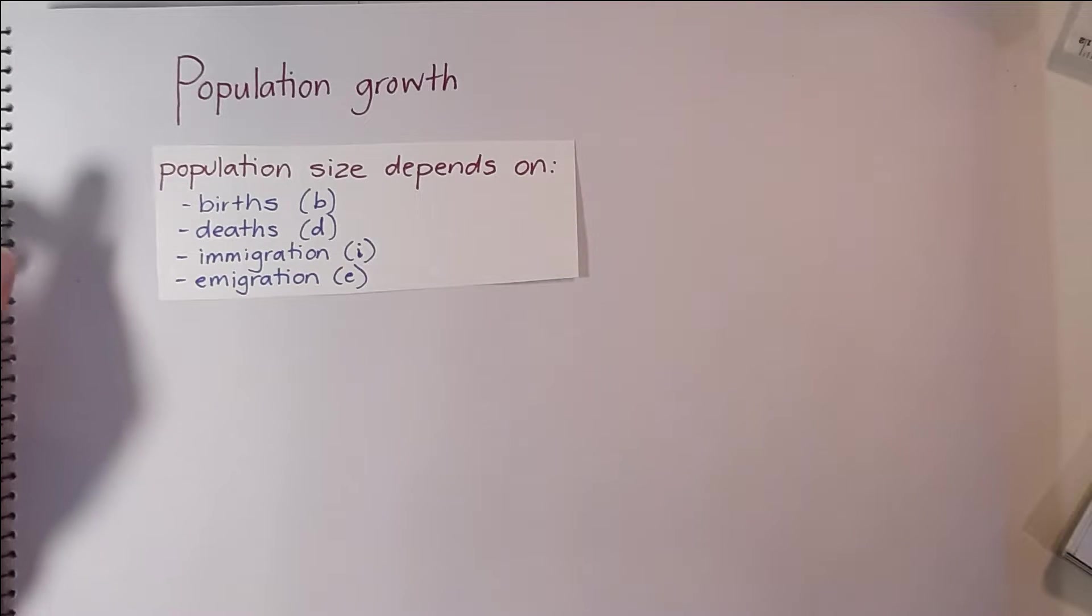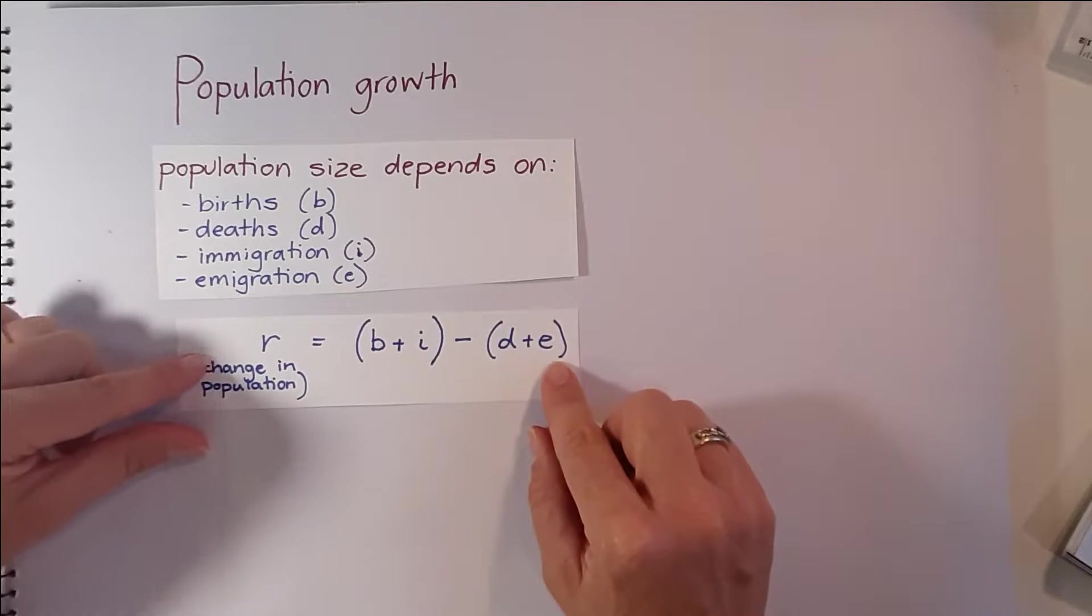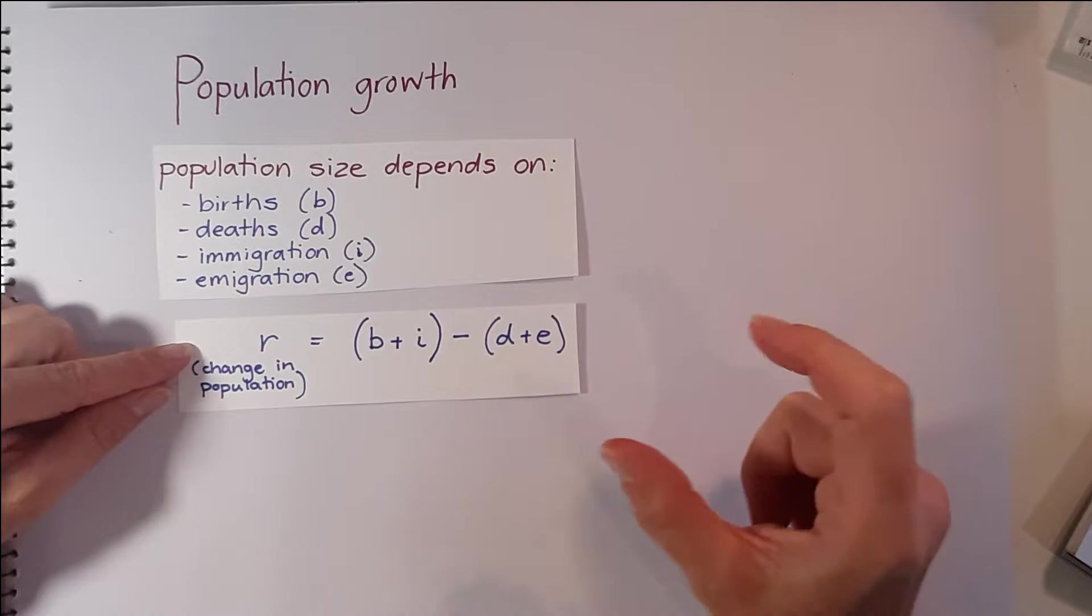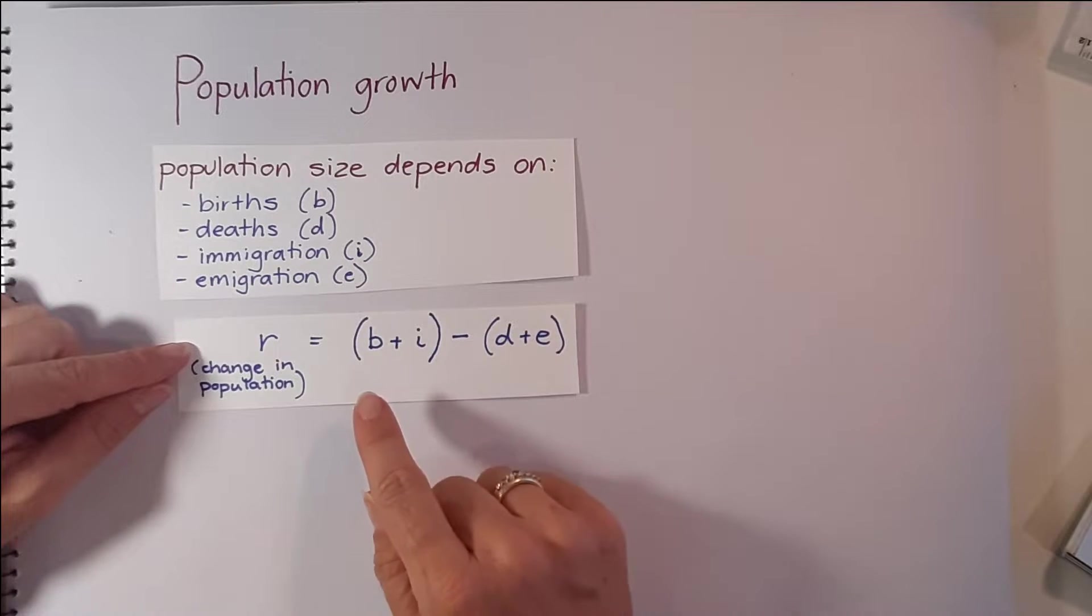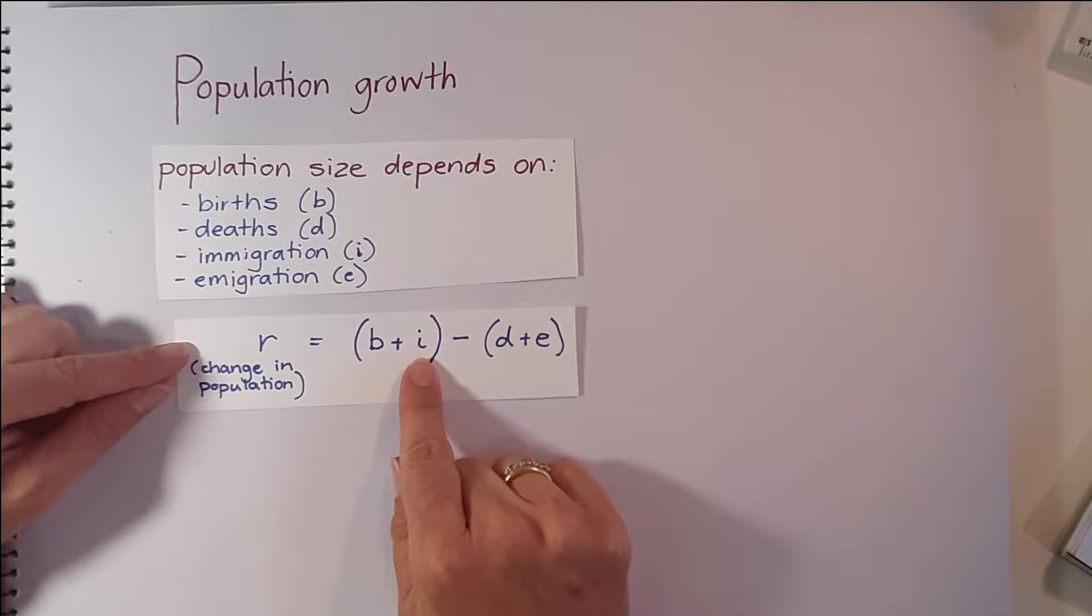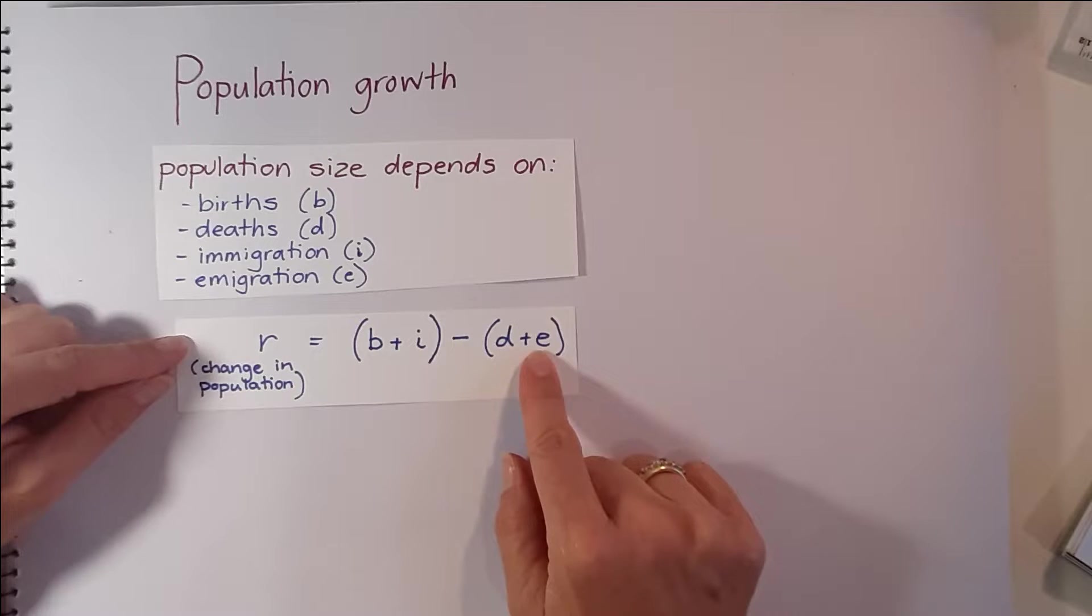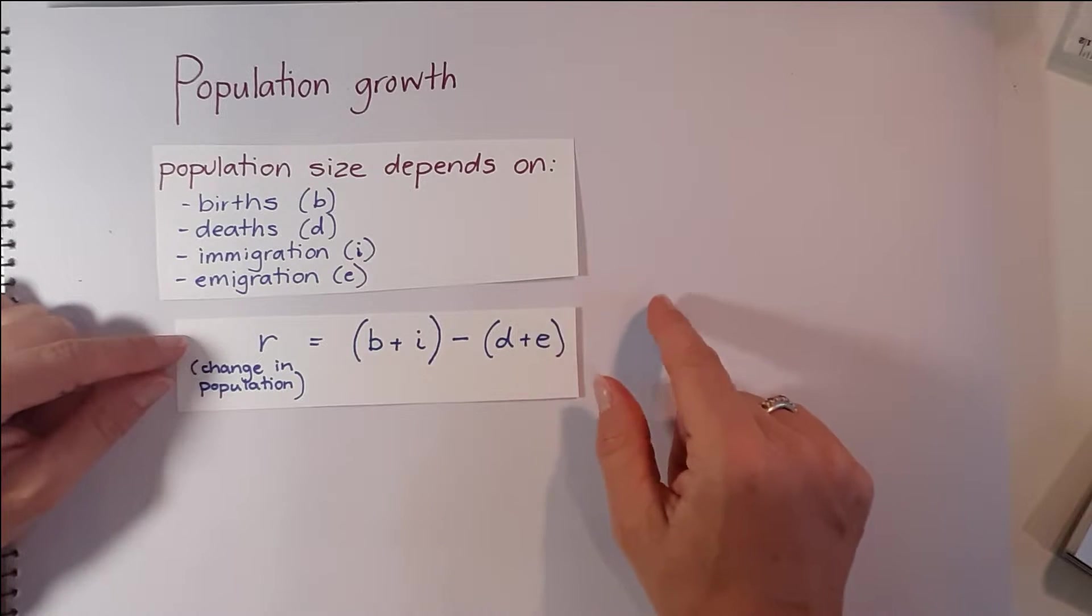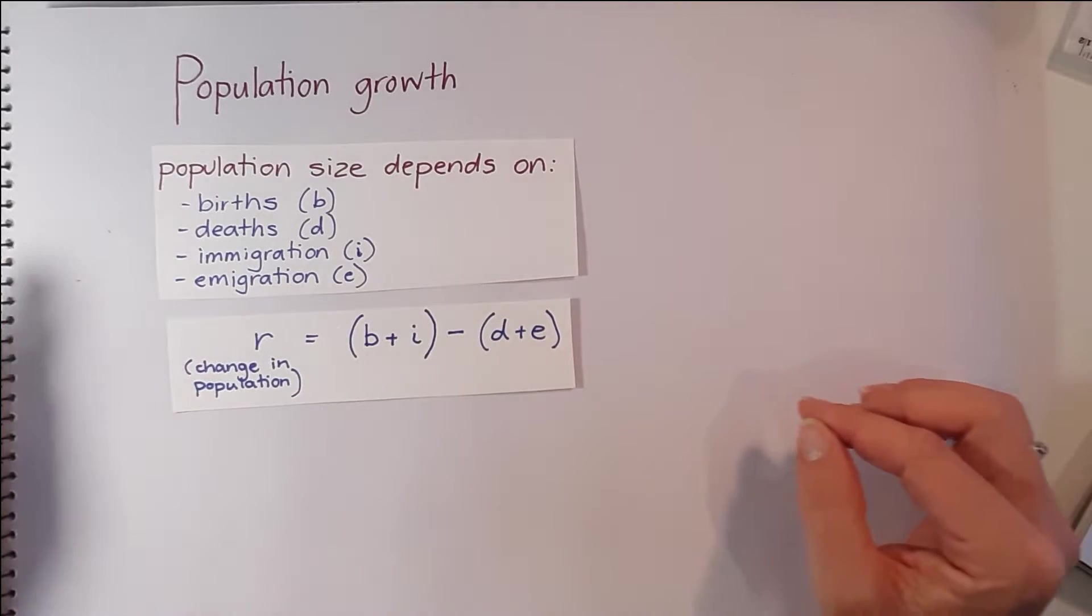And how we can calculate the size or the change in a population using this formula. So R equals the change in the population size, and it can be calculated by taking the number of births and adding the number of immigrations, or individuals moving into an area, and subtracting the sum of the number of deaths and emigrations, or individuals leaving an area. So if we do that, that will tell us the change in the size of a population.